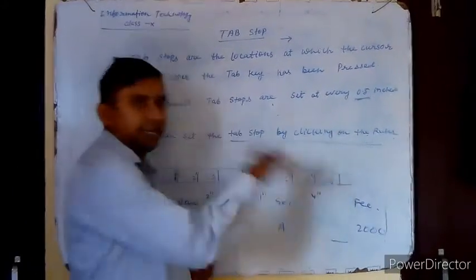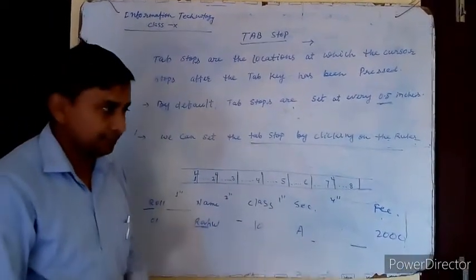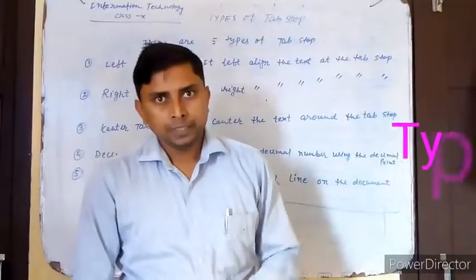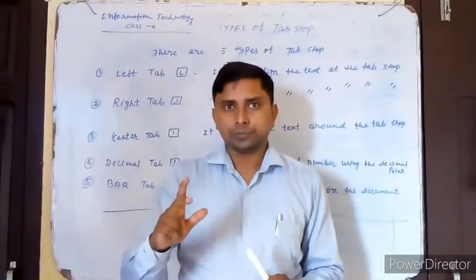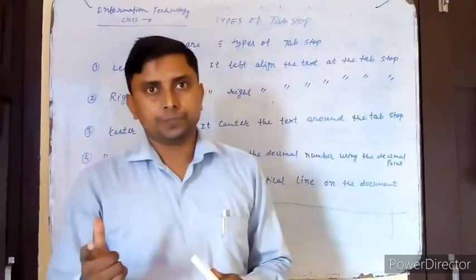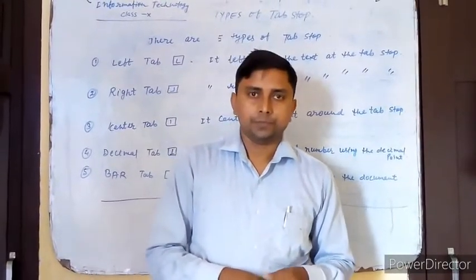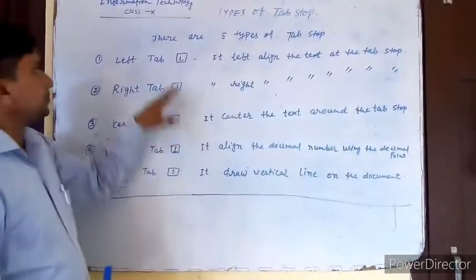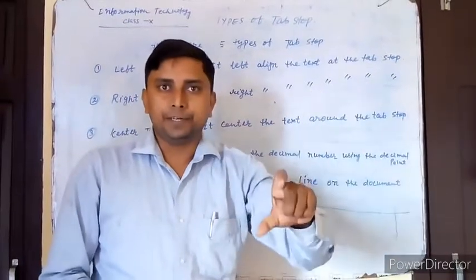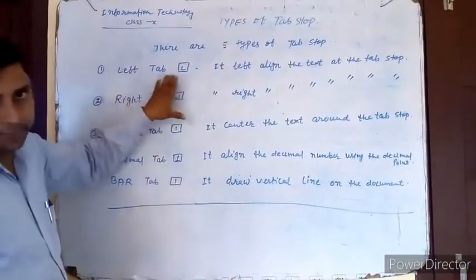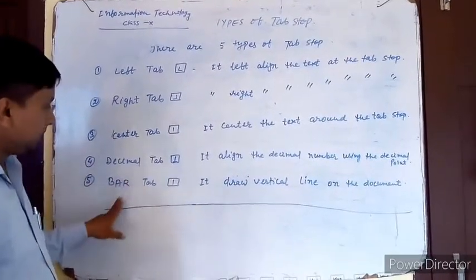Now let's look at the types of tab stop keys. We can use the tab stop key in different forms. There are five types of tab stops: left tab, right tab, center tab, decimal tab, and bar tab.